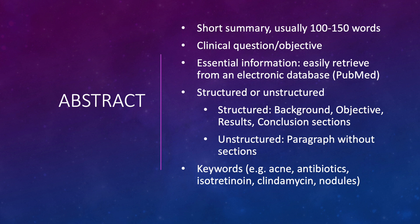The abstract is a really short summary. When you're about to read any manuscript, the first thing you look at is the abstract because it tells you what it's all about. You want to write your abstract last, because that way you'll have the whole review done and you'll really know what the key points are to include. Make sure you state the clinical question you're answering or the objective of the review, along with essential information so people can easily retrieve it from databases like PubMed.